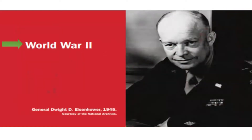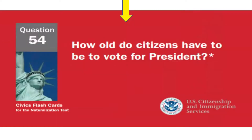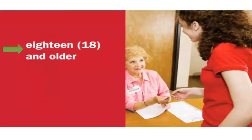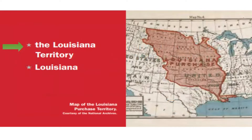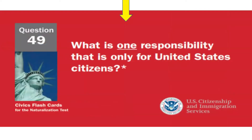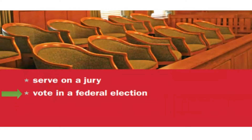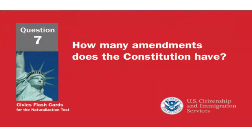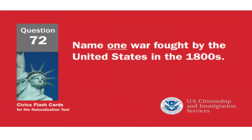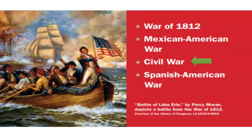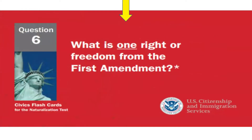Before he was president, Eisenhower was a general — what war was he in? World War II. How old do citizens have to be to vote for president? 18 and older. What territory did the United States buy from France in 1803? The Louisiana Territory. What is one responsibility that is only for United States citizens? Vote in a federal election. How many amendments does the Constitution have? Twenty-seven.